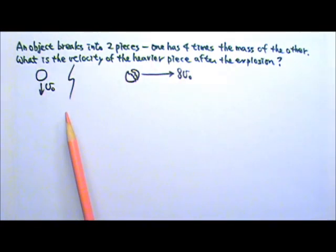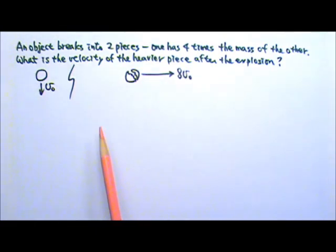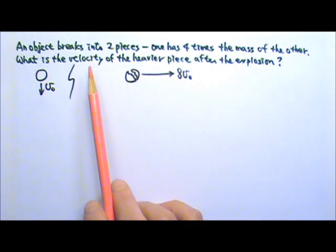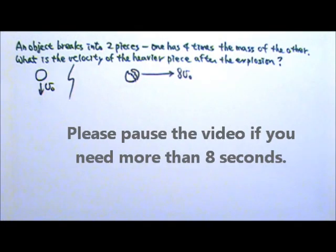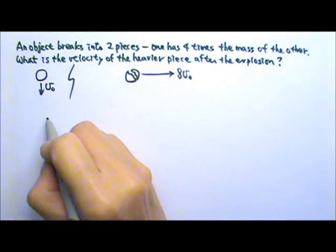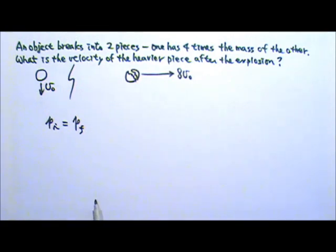This is a two-dimensional problem. In physics, what do we do if there is a two-dimensional situation? We take care of it one dimension at a time. So we will look at it in the x-direction and the y-direction separately. It's an explosion problem, so we are going to use the conservation of momentum — initial momentum equals final momentum — and we are going to look at x and y separately.